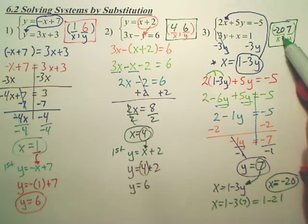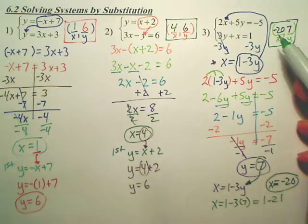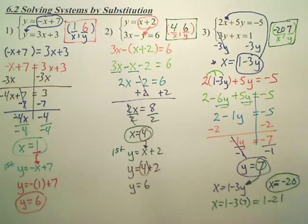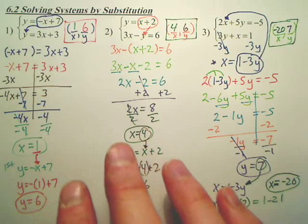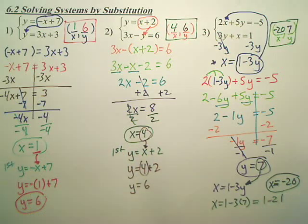So, my answer, where they cross, these two graphs would cross at negative 20, 7. That's my x value. That's my y value. It's called substitution. You're taking one equation, plug it into the other, solving it.